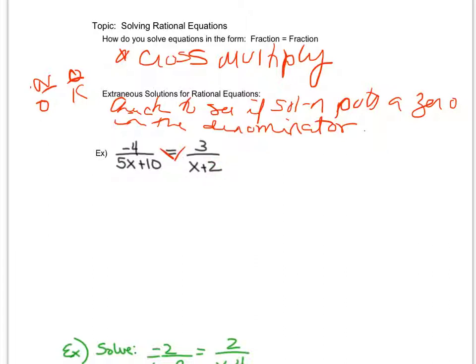I'm going to cross multiply, and I get negative 4 times x plus 2. After I cross multiply, I set those two quantities equal. So equals 3 times 5x plus 10. Notice that I acknowledge that 5x plus 10 was originally one grouping on the bottom, and x plus 2 was originally one grouping. From here, I now have an equation to solve, so I can distribute my minus 4.